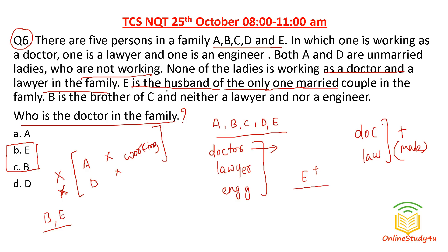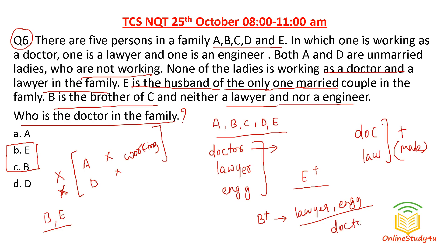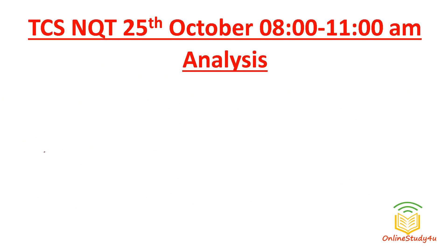E is the husband of the only married couple, so E is male. B is the brother of C, so B is male, and B is neither a lawyer nor an engineer. Since there are only three professions — doctor, lawyer, engineer — B must be the doctor. So for question number six, option C (B is the doctor) is the correct answer.